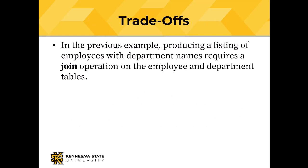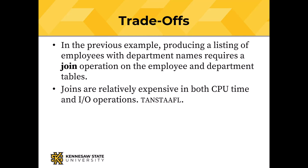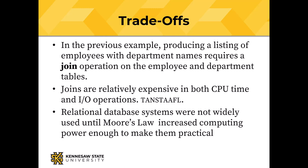Producing a listing of employees with department names — where I've got an employee table and a department table, or patients and doctors — requires this thing called a join operation. Joins are CPU and IO intensive; there is no such thing as a free lunch. We got some assurance that our data are valid, but we paid for it in CPU time and IO operations. Because joins and other operations on relational databases are relatively expensive, relational database systems didn't really come into use until Moore's Law gave us enough computing power to make them practical.